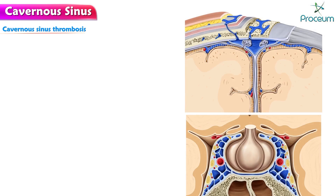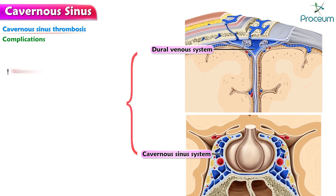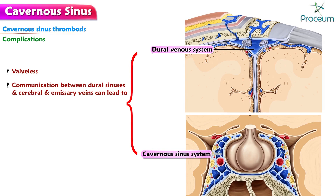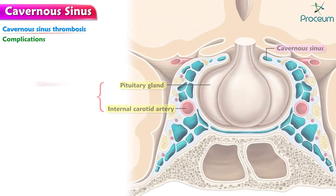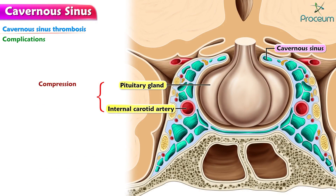Lastly, let's learn about the complications. As the dural venous and cavernous systems are valveless, communication between dural sinuses and cerebral and emissary veins can lead to meningitis, dural empyema, or cerebral abscesses. Propagation of infection via the internal jugular vein can result in septic pulmonary emboli, pulmonary abscesses, pneumonia, or empyema. Compression of the internal carotid artery and pituitary gland may result in stroke and hypopituitarism, respectively.